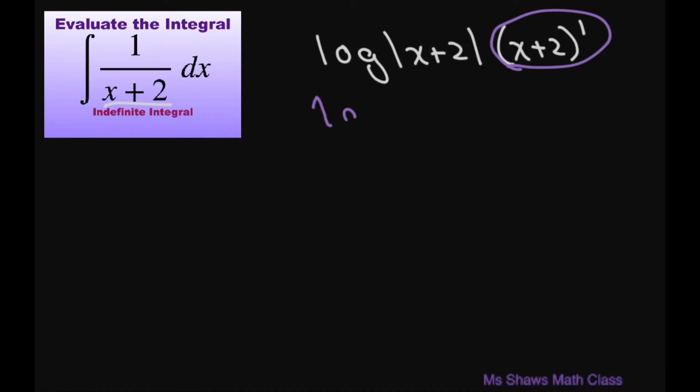So a lot of times it's not written out. And then you multiply it by 1 which just gives you log of absolute value of x plus 2. And don't forget your plus c.